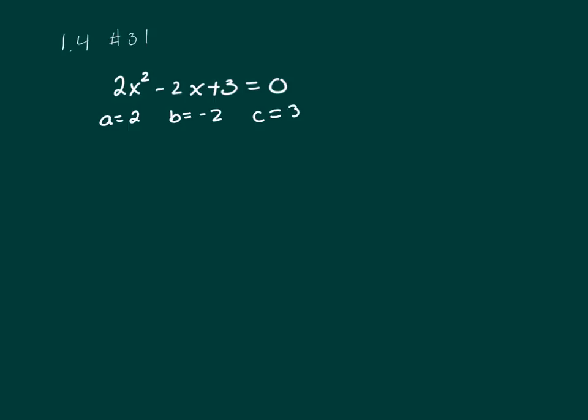So negative B would be negative negative 2. This is our formula: negative B plus or minus the square root of B squared minus 4AC all over 2A.